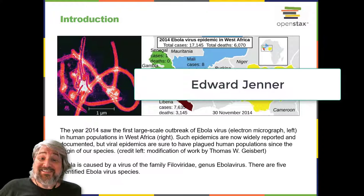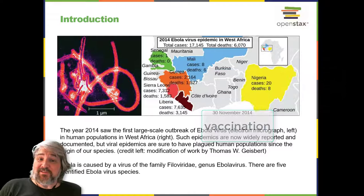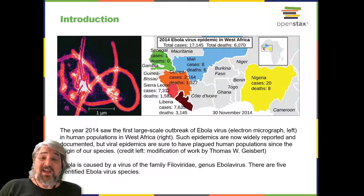Today, the structure and genetics of viruses are well defined, yet new discoveries continue to reveal their complexities. In this chapter, we will learn about the structure, classification, and cultivation of viruses, and how they impact their hosts. In addition, we will learn about other infective particles such as viroids and prions.